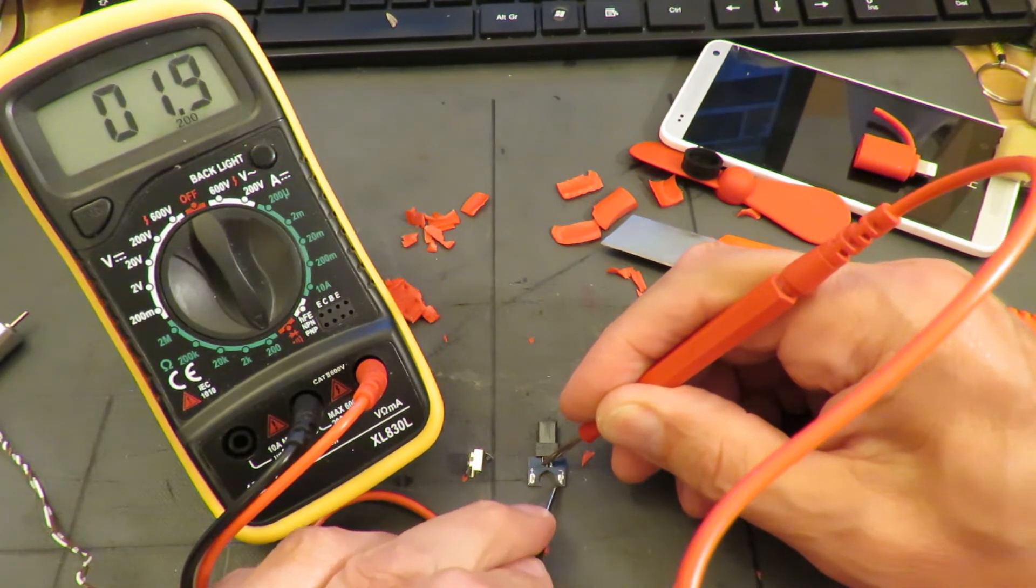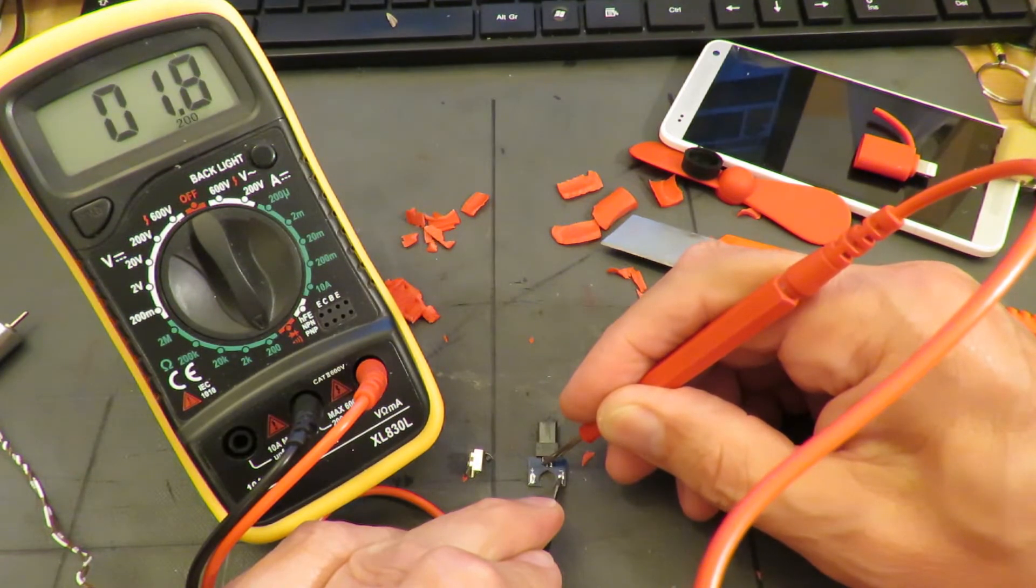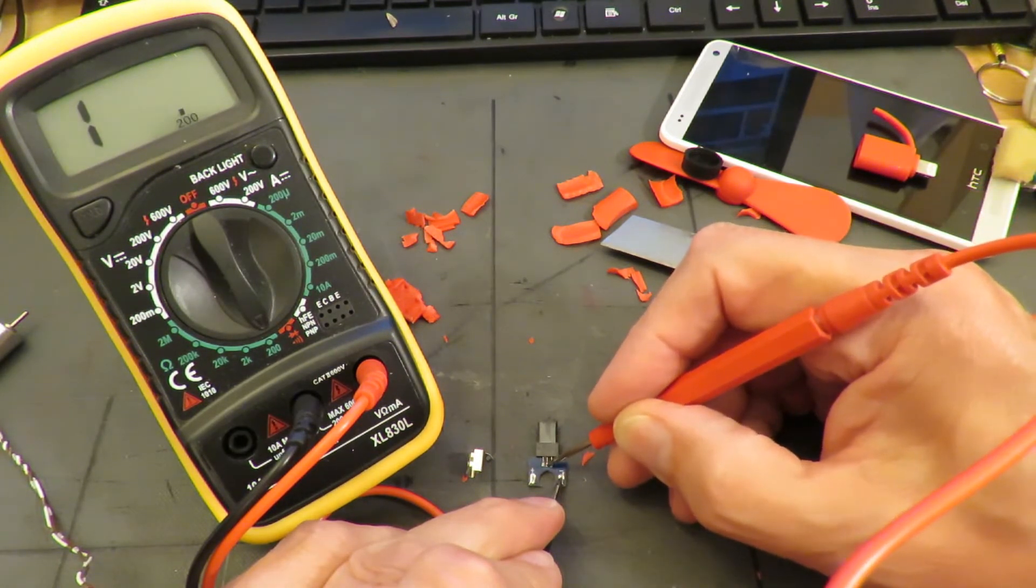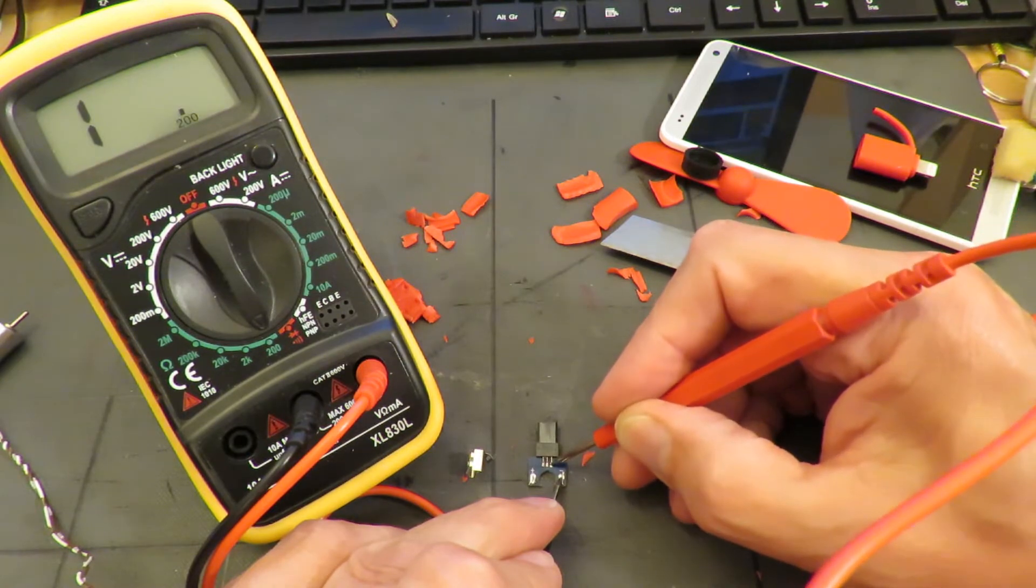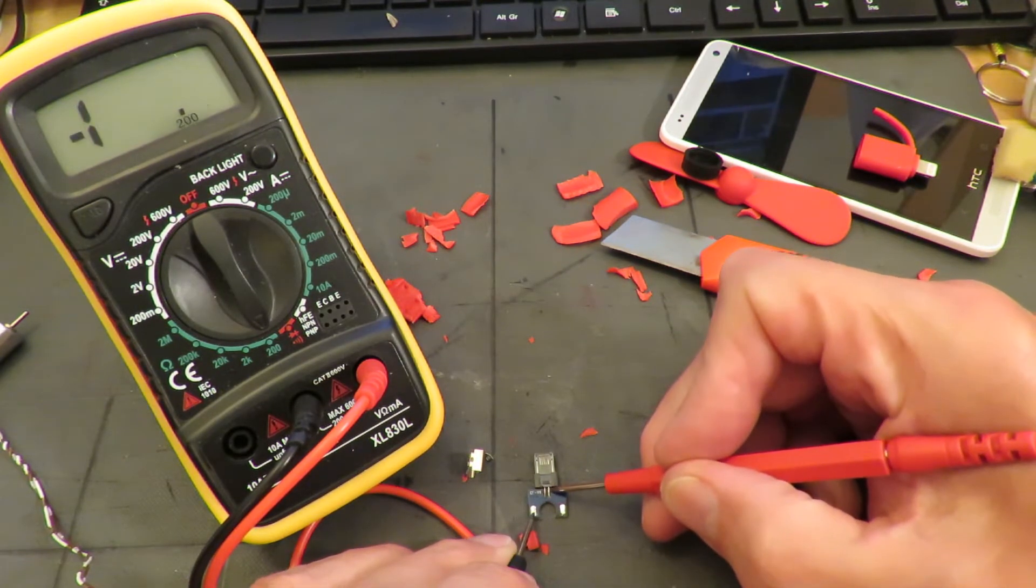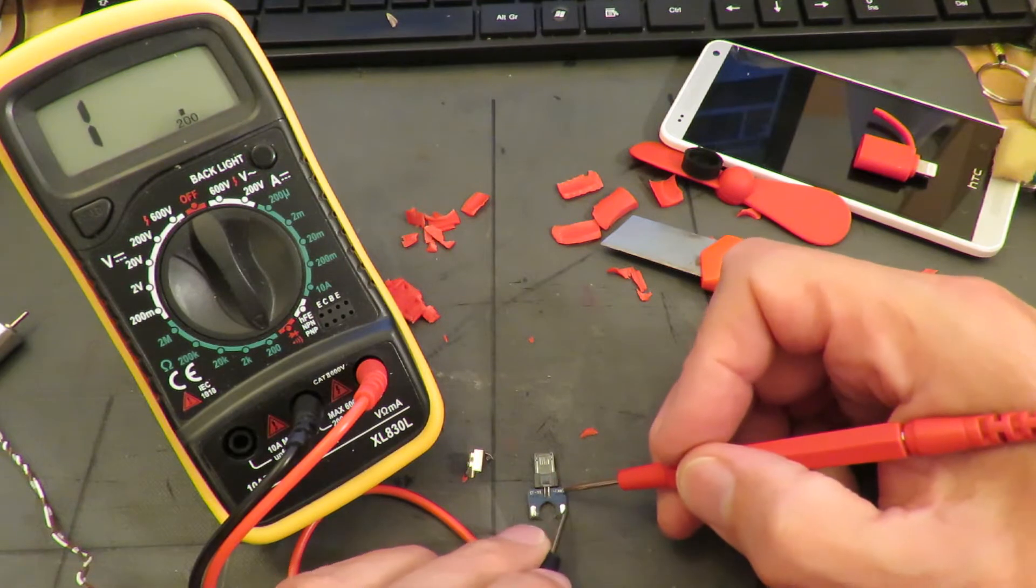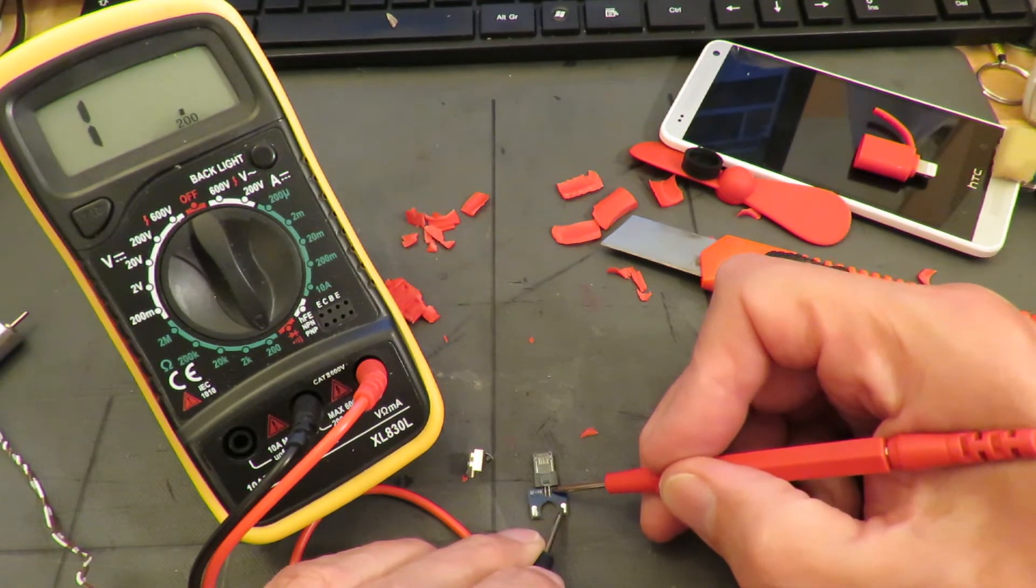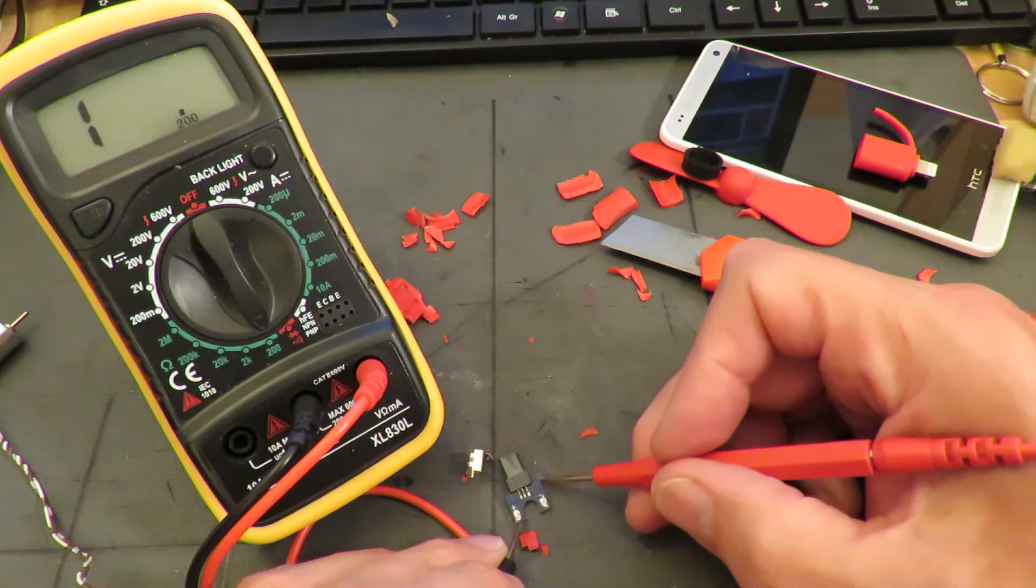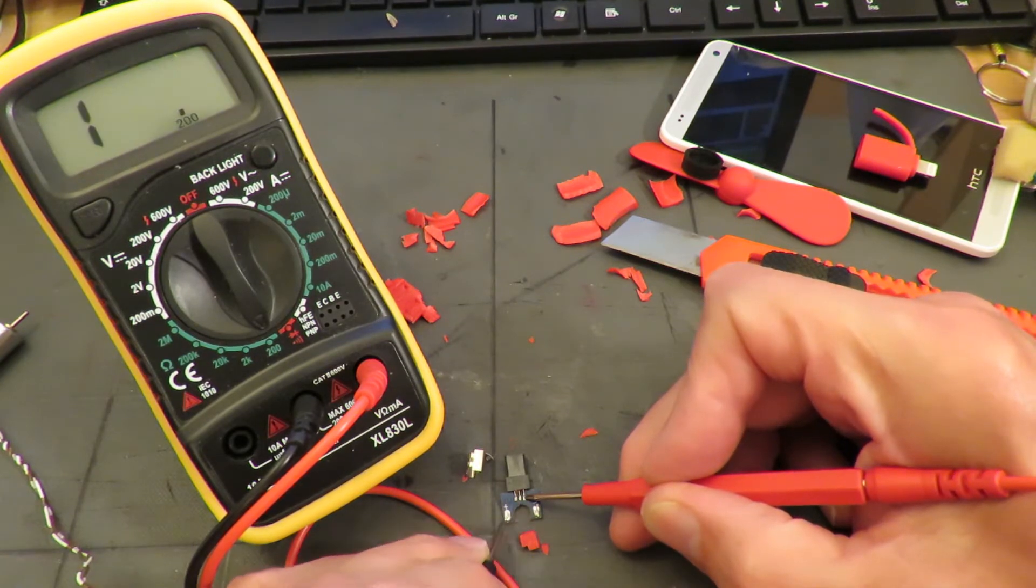That one's short circuit to there. Open circuit. Open circuit. Turn it over. That one goes across to there, open circuit to that side, open circuit, so that one goes to there, and that one goes to there.